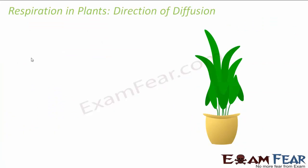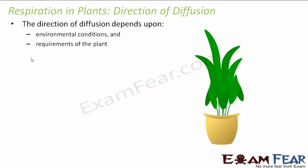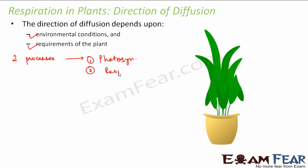Now let us talk about the direction of diffusion. The gases that plants exchange are oxygen and carbon dioxide. Whether oxygen will move out of the plants into the atmosphere or come from outside to inside, or whether carbon dioxide will move in a particular direction — the direction of diffusion depends upon the environmental conditions and the requirements of the plant. The two main processes which take place inside plants are photosynthesis and respiration.